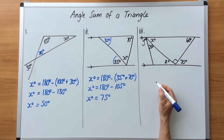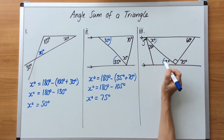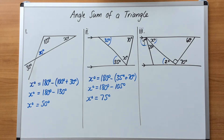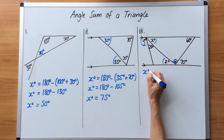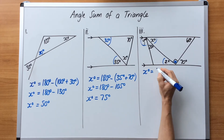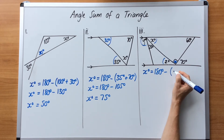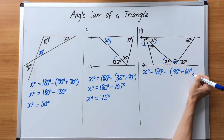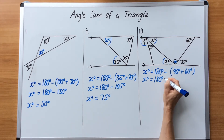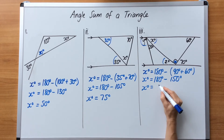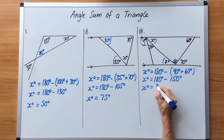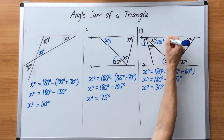Moving on to the last diagram — it's quite complex. We've got x, y, and z to solve. There are lots of clues for us to use. First I'm going to solve x: I have a 90 degree angle, a 60 degrees, and an unknown for x. We go 180 degrees minus — and we put 90 degrees plus 60 degrees — and add that: 90 and 60 equals 150. 180 minus 150 is 30 degrees. So that angle there is 30 degrees.